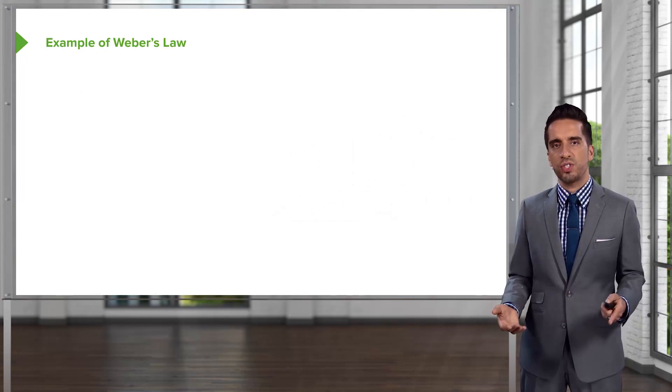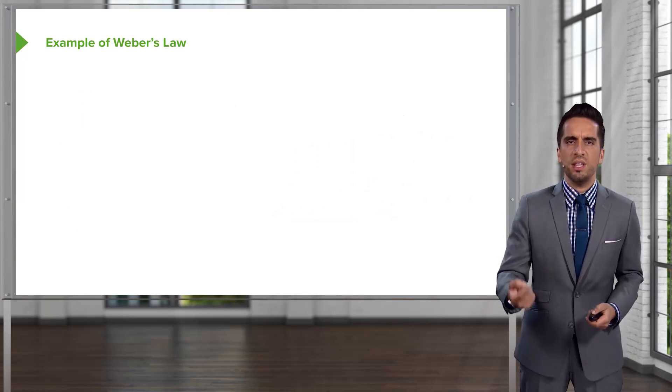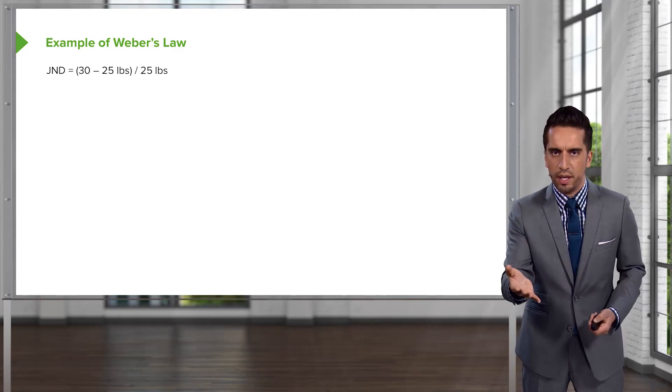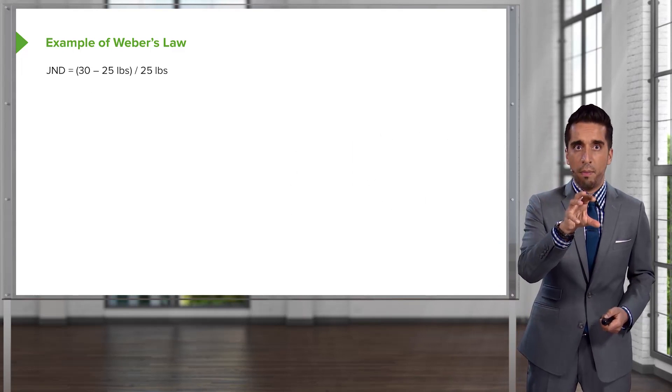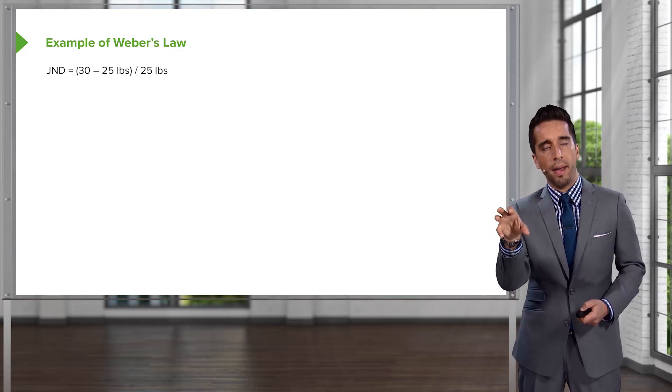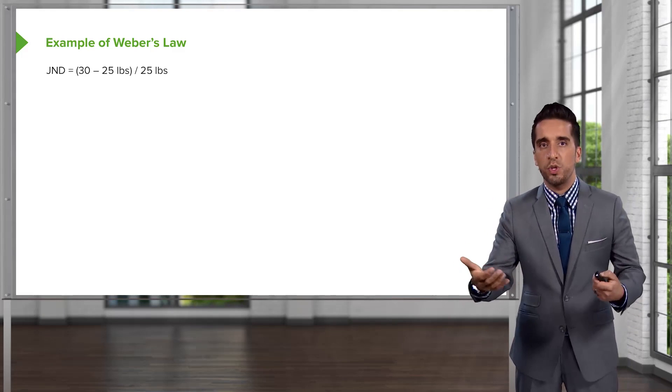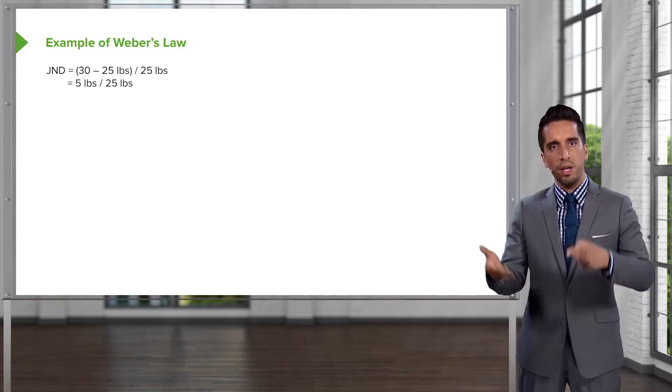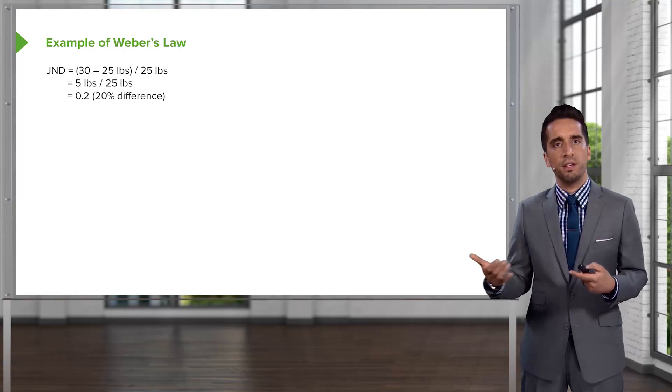We're going to take a look at this example. And we're going to walk through the bits and pieces that you should know. So, if you were to see this, you should quit right away. And I'd ask you, what's the JND? Well, did you come up with this answer? 30 pound bag minus the 25 pound bag. So, there's your delta that we're trying to figure out over the initial stimulus, which was the 25 pound bag. That gets us 5 pounds over 25 pounds. Cancel out the units and you're left with 0.2 or 20% difference.